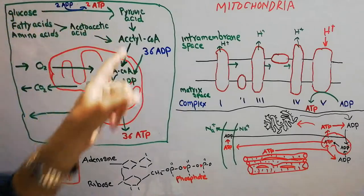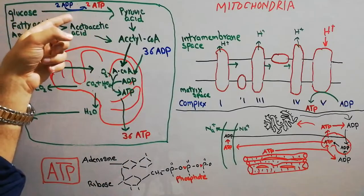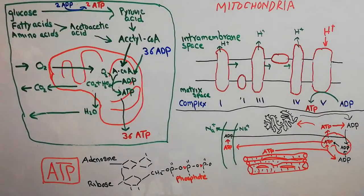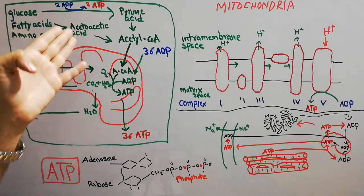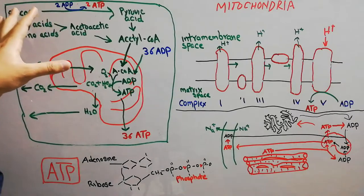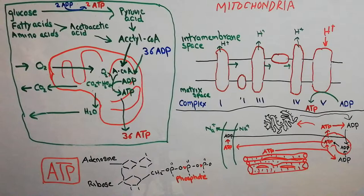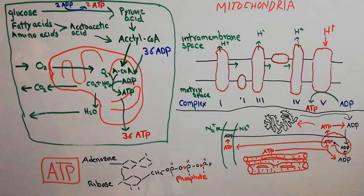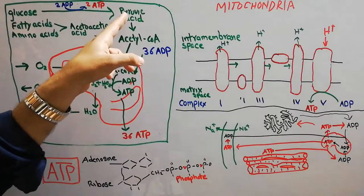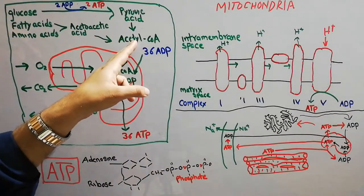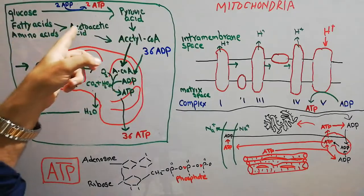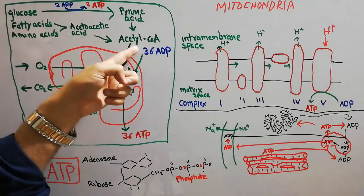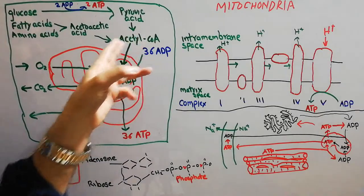Glycolysis occurs outside the mitochondria, in the cytoplasm. Glucose is converted into pyruvic acid outside the mitochondria. Similarly, fatty acids and amino acids are converted into acetoacetic acid. In the process of glycolysis, two ATPs are formed from one glucose unit — these two ATPs constitute only about five percent of the total ATPs produced. Ninety-five percent of ATPs are produced inside the mitochondria. Pyruvic acid is then converted into acetyl CoA, and similarly acetoacetic acid is also converted into acetyl CoA.